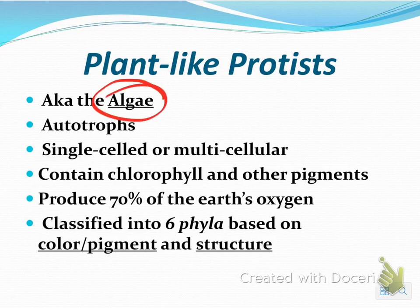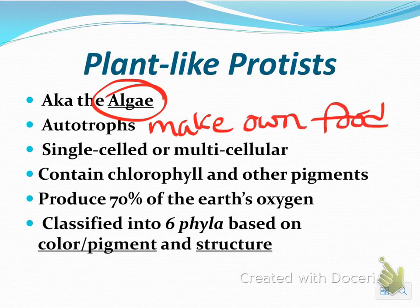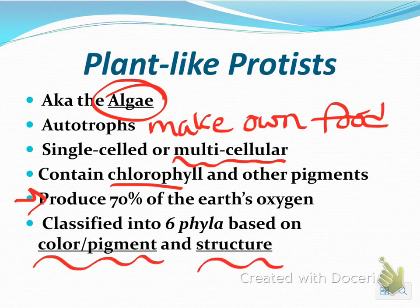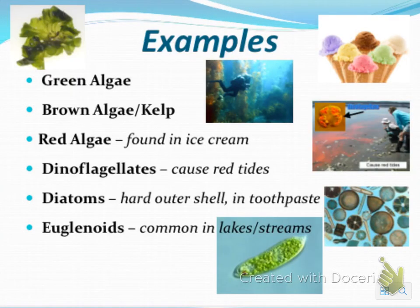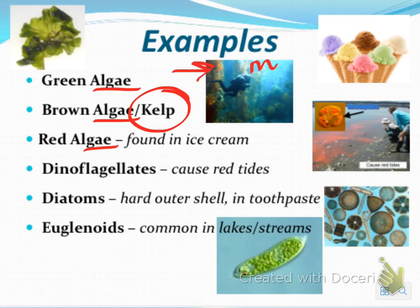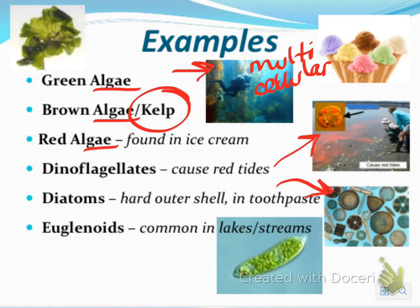Plant-like protists are known as algae. They are autotrophs, which means they make their own food. They can be single-celled or multicellular — this is where your multicellular protists come in. They contain chlorophyll and other pigments that rely on the sun to create food. Plant-like protists actually produce 70% of the Earth's oxygen. They're classified based on color pigment and structure. Examples include kelp, which is multicellular and very large, dinoflagellates which cause red tides, diatoms which are found in toothpaste, and euglenoids found in lakes and streams.